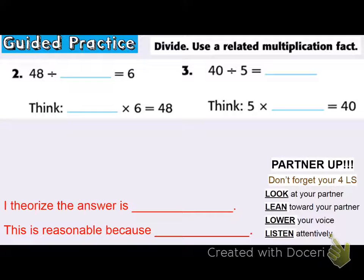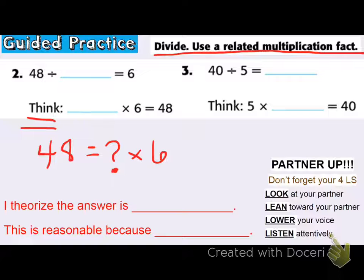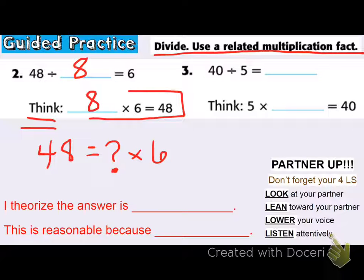Still in guided practice: divide, use a related multiplication fact. Sometimes knowing your multiplication facts can help you solve division, because it's all a family. So 48 divided by some number is 6. I can think about that family — some number times six will equal 48. I know that six times eight is 48. So that must mean that 48 divided by eight will give me six. The answer is eight, and it's reasonable because eight times six does equal 48.